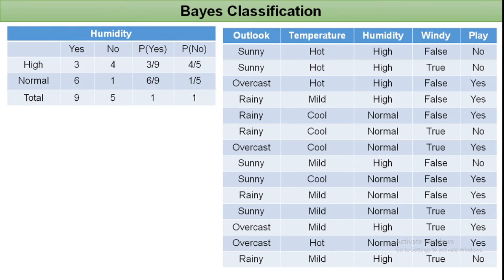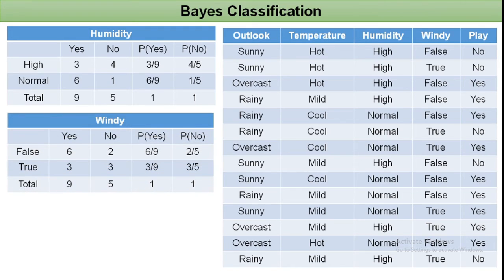For humidity, there are two categories: high and normal. For high humidity, 'Yes' are 3 and 'No' are 4, so probabilities are 3/9 and 4/5. For normal humidity, 'Yes' are 6 and 'No' are 1, giving 6/9 and 1/5. For the windy condition, false gives 6/9 and 2/5, and true gives 3/9 and 3/5.